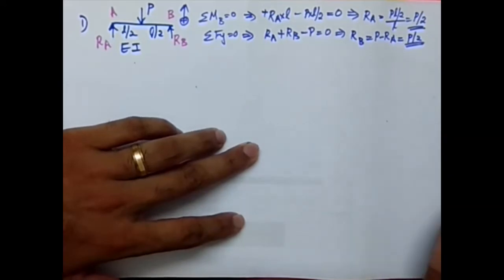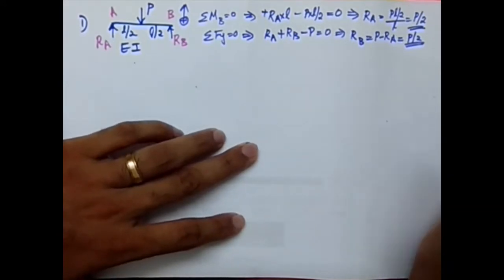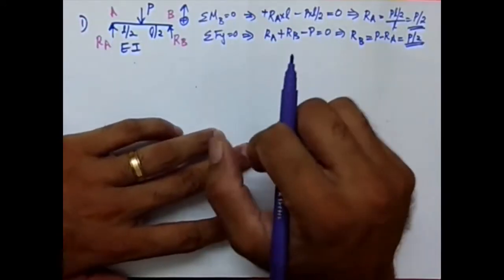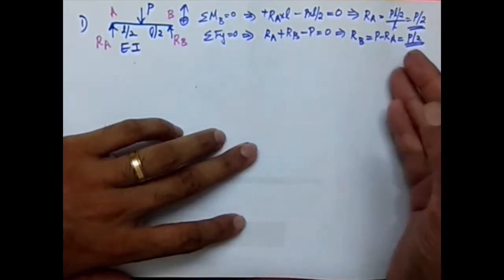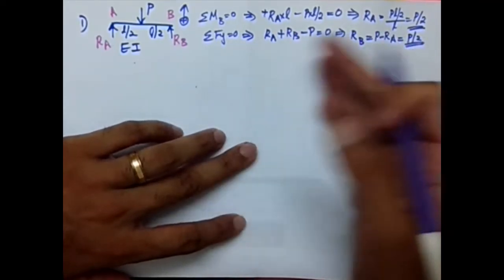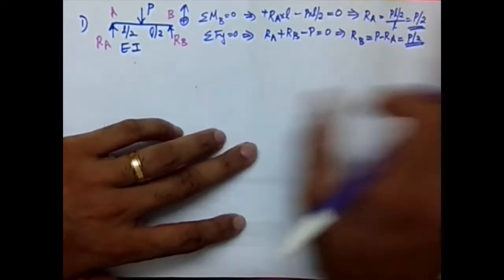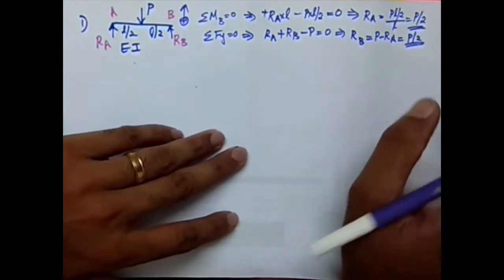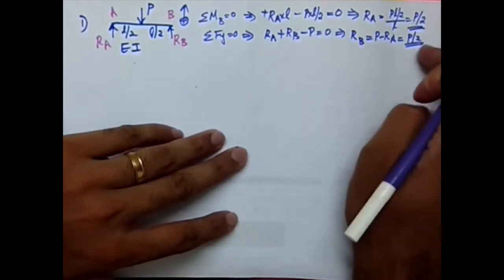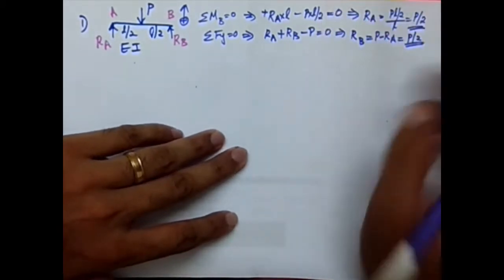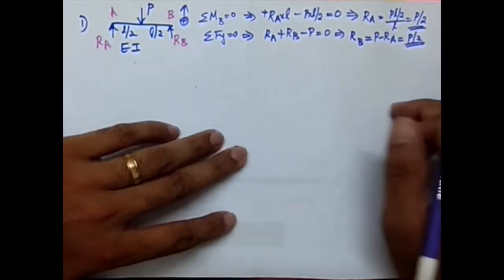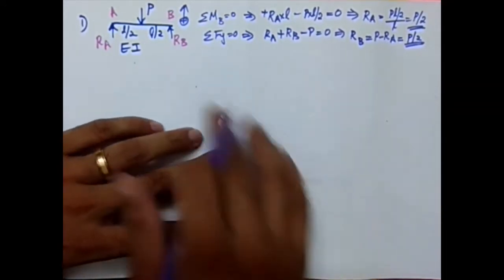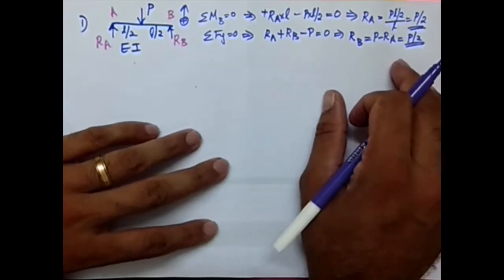From an exam point of view, there is no need to write all these long steps. If you are familiar with shortcut methods for calculating support reactions, you can use those — there is no problem. The relevance is just to get the two reaction values; any method that gives you those values is fine.